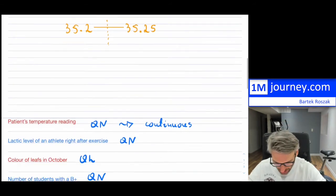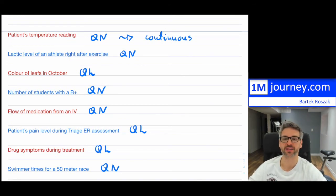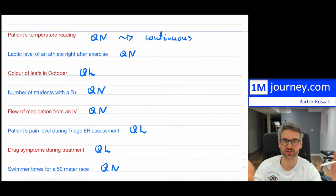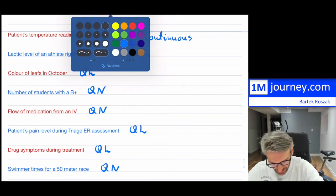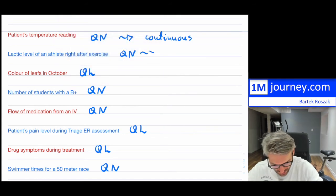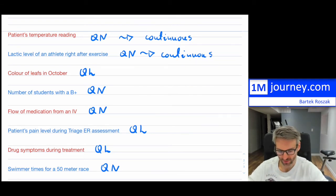Lactic level of an athlete — is that continuous? If you have a certain lactic level, it's going to be some number, and it is indeed a continuous strand. It can continue, so the lactic level is continuous.